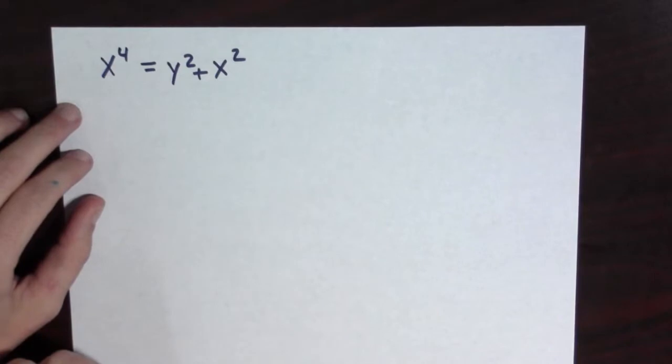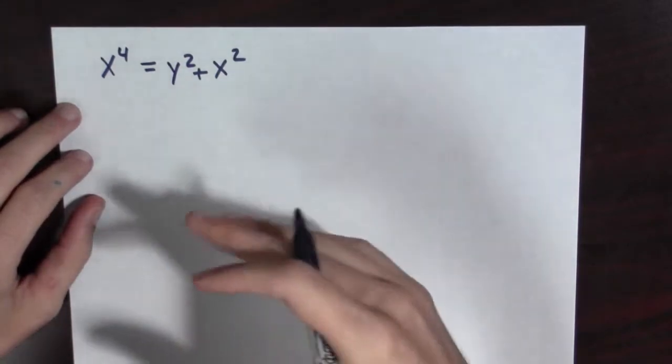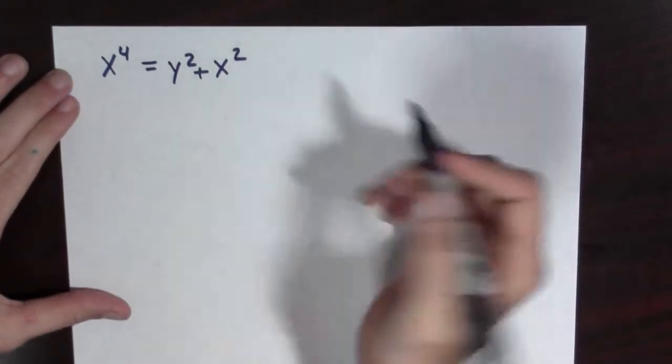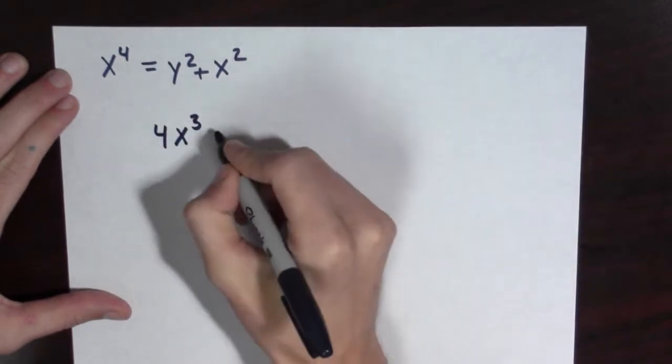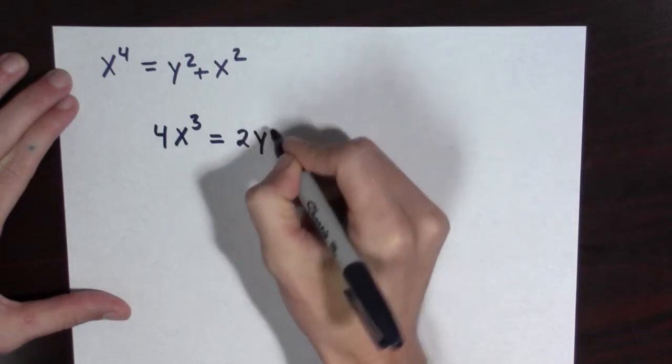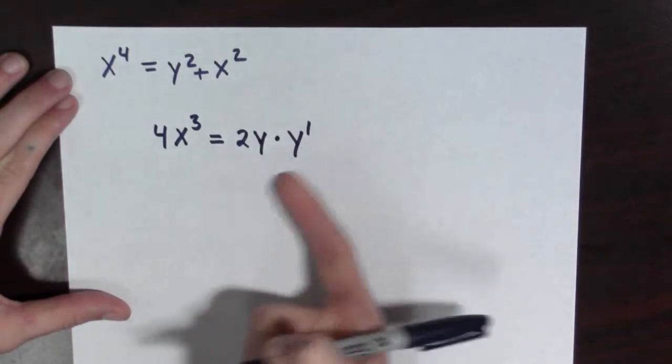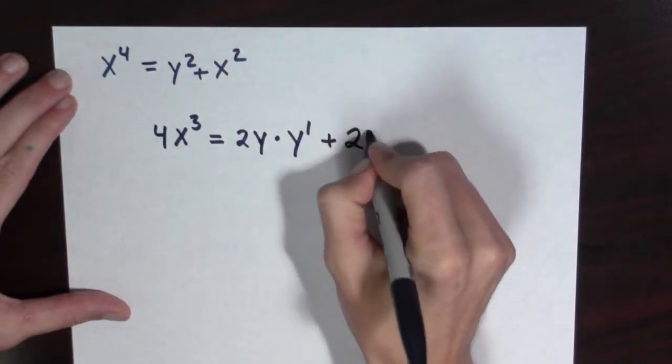So here we are. We're going to use implicit differentiation. In particular, we're going to see the chain rule in action. So let's take the derivative of both sides. We're going to have 4x cubed is equal to 2y times y prime. Here's this derivative of y being kicked out by the chain rule, plus 2x.